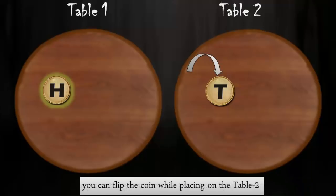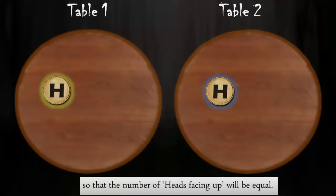You can simply flip the coins while placing on table 2 so that the number of coins with heads facing up will be equal.